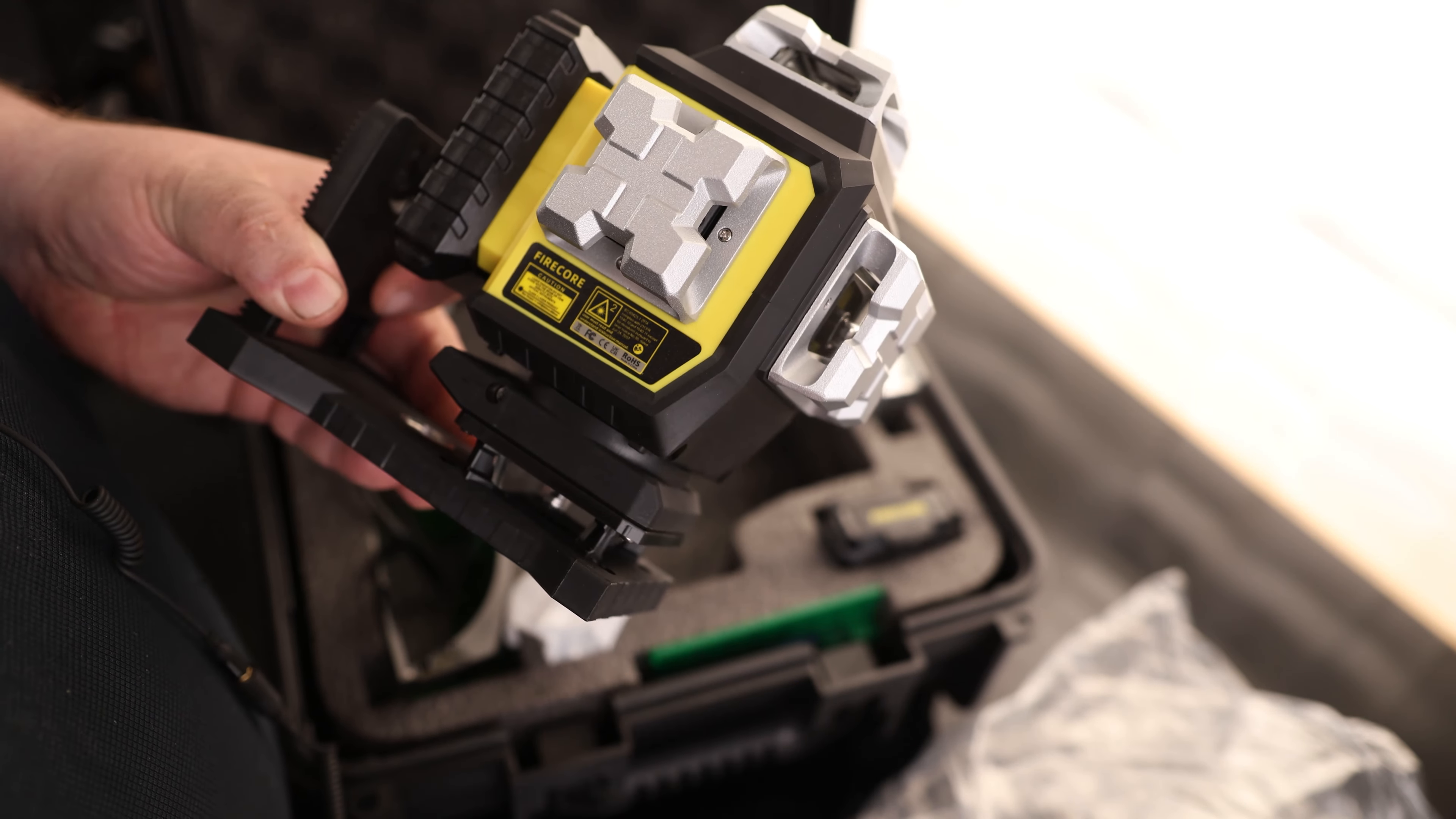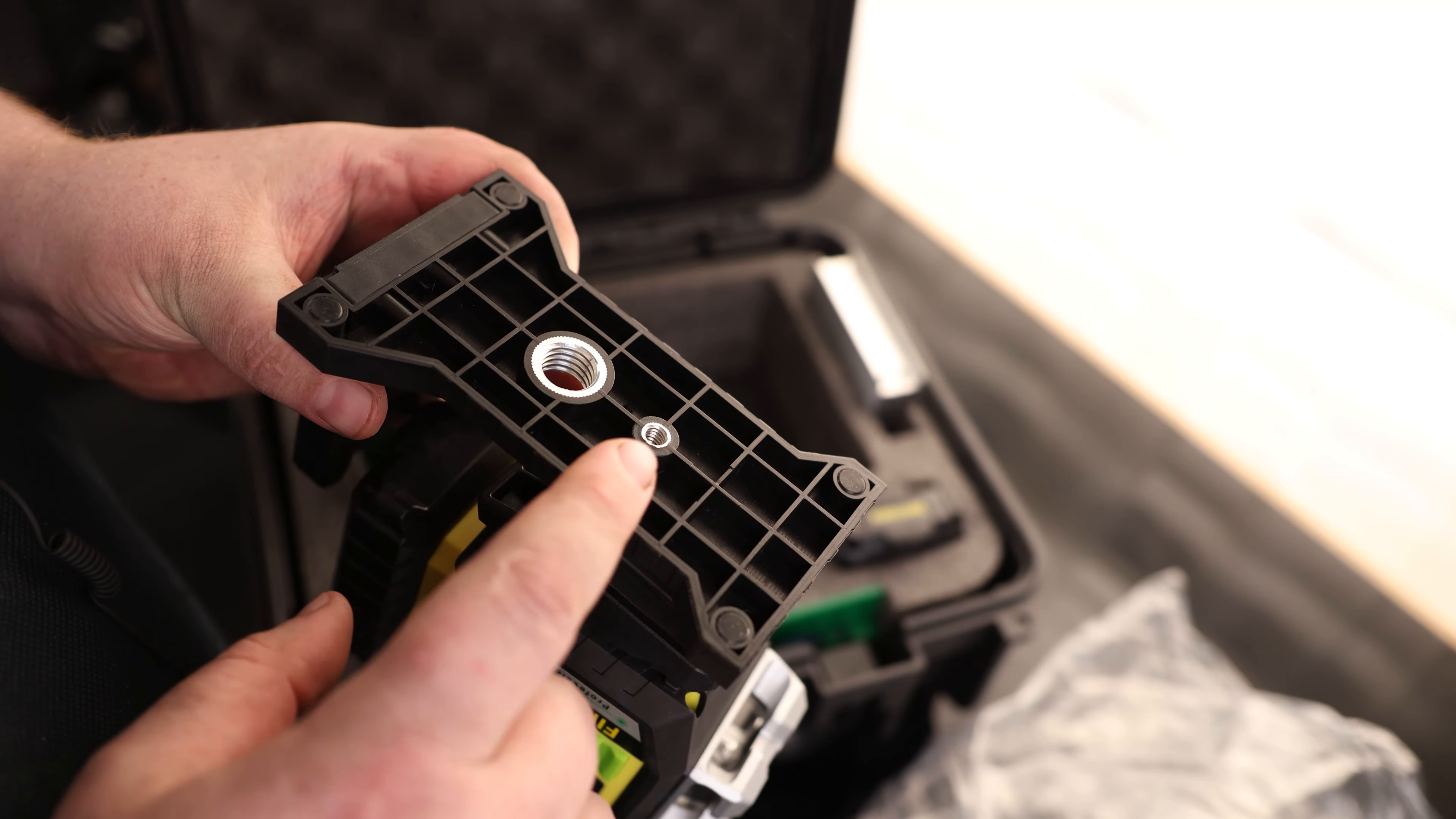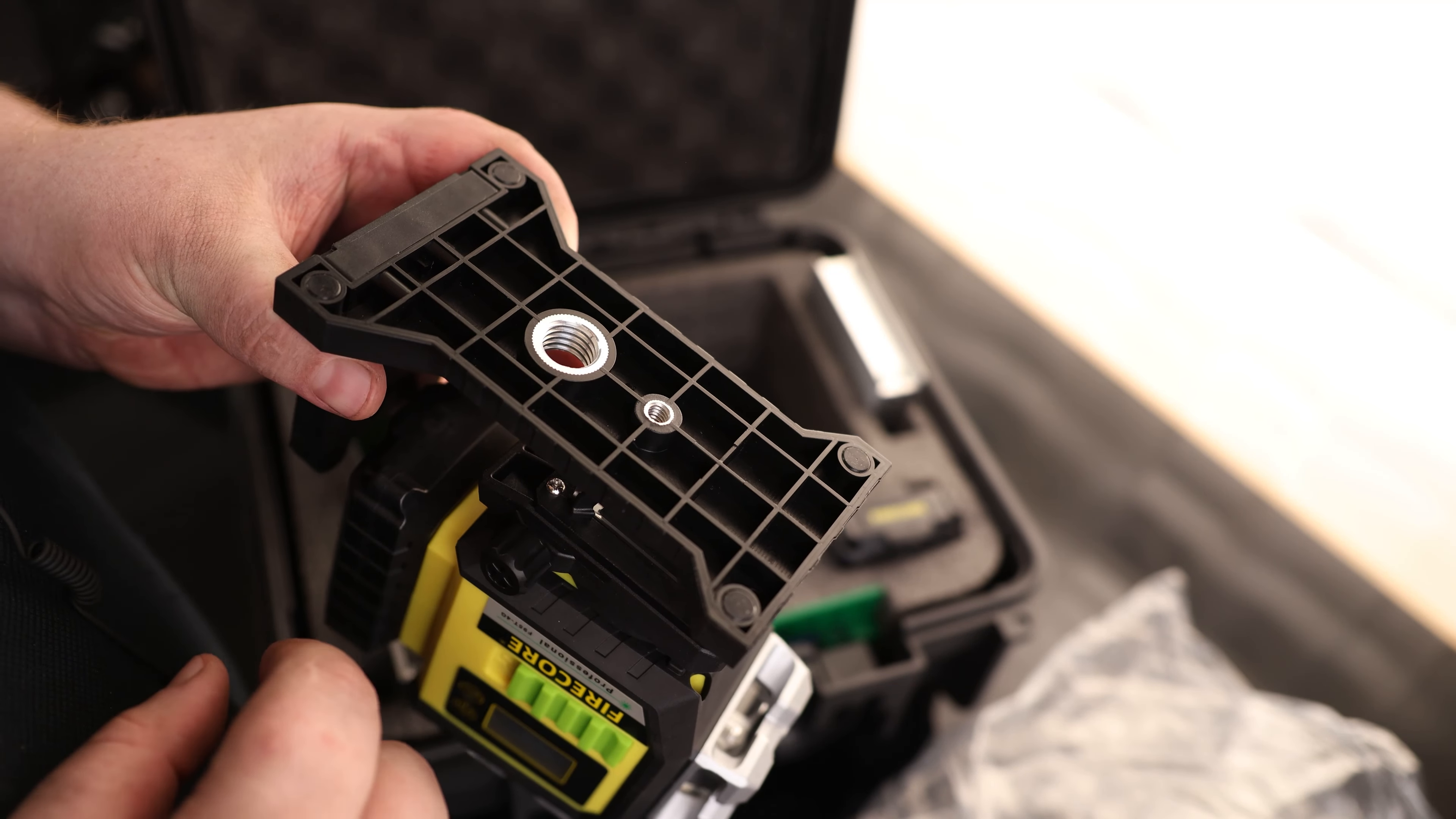So if you want to buy only one level, one like this is the type to get. On the bottom, we've got two threaded mounts. So we've got a quarter-twenty. We can put this on any kind of a camera tripod. And we've got a five-eight. So if you want to put this on a laser level tripod, you can do that.